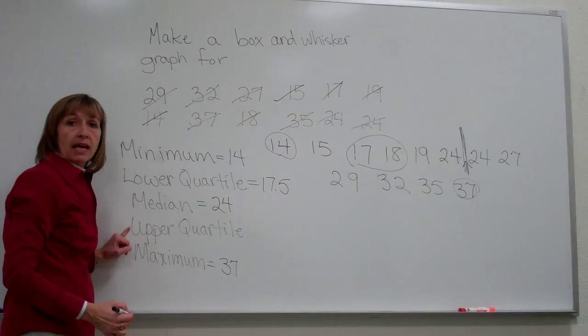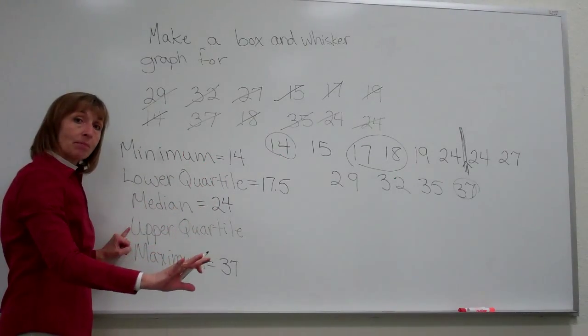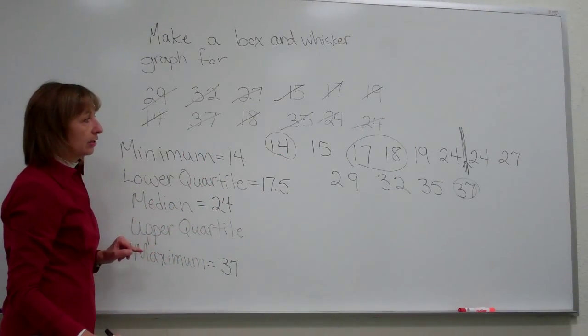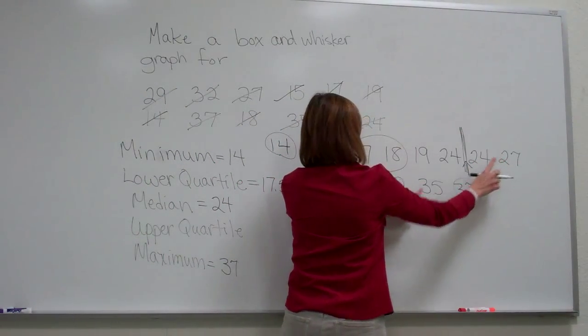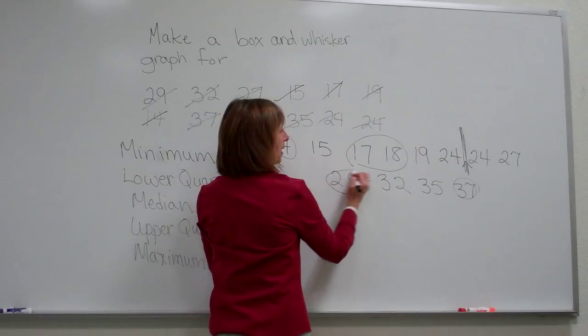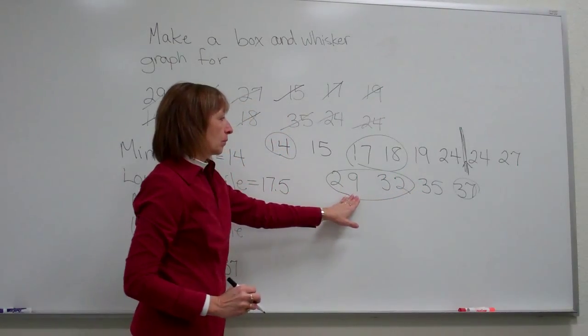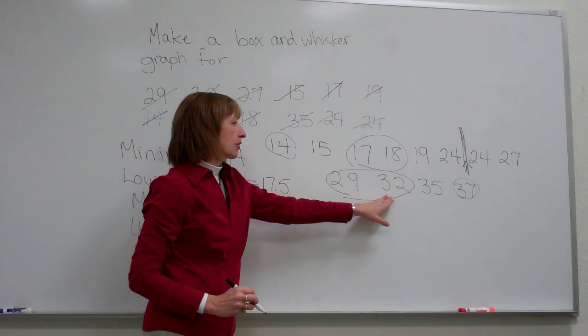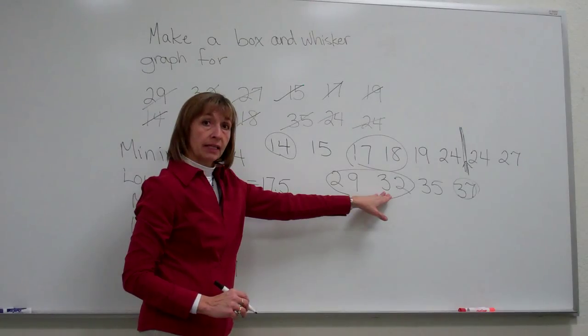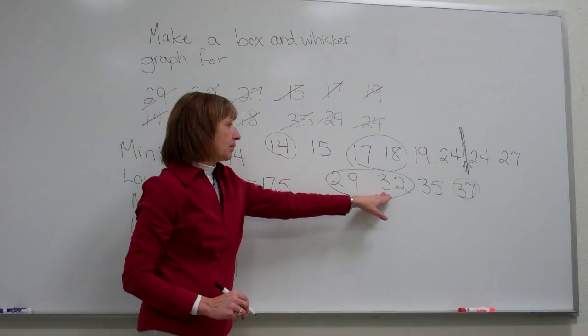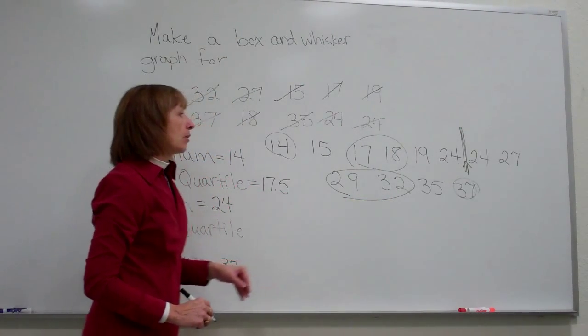The upper quartile is just the median of the top of the data set. As I look at these values, I have my median of my top values of my data set will be at 29 to 32 and divide by 2. So 29 plus 32 is 61, and 61 divide by 2 is 30.5.